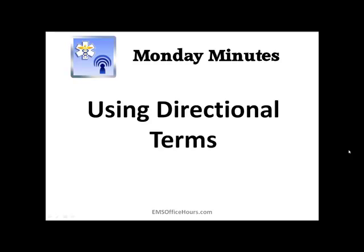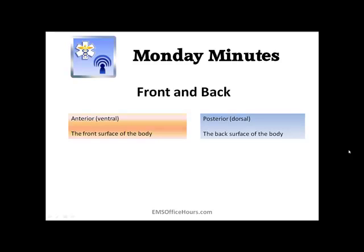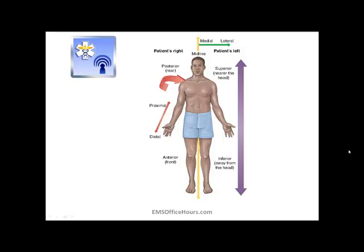Directional terms are usually shown as pairs. Front and back, in common terms — front would be the anterior or ventral area, which is the front surface of the body. Back, of course, is the posterior or dorsal area, the back surface of the body. Looking at a picture here, you can see the anterior is the front of the body, and if we turn this image around, the posterior would be the rear or dorsal area of the body.